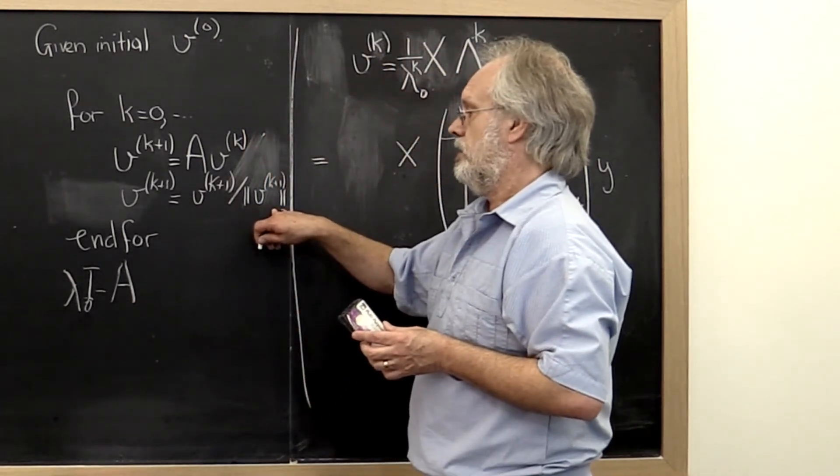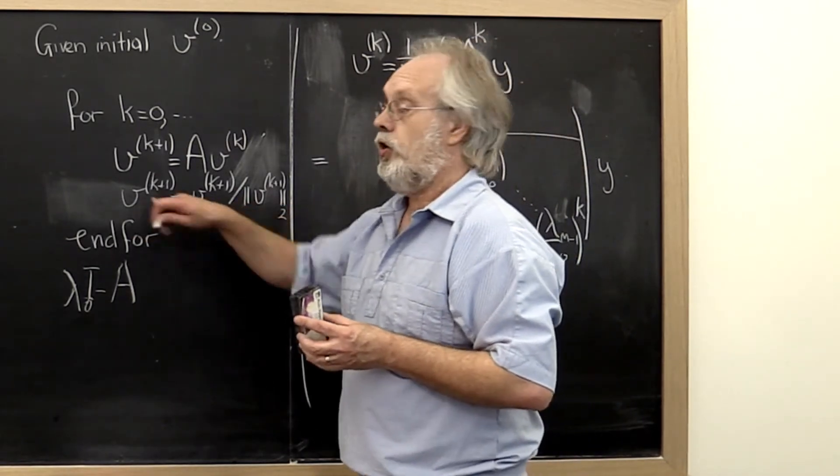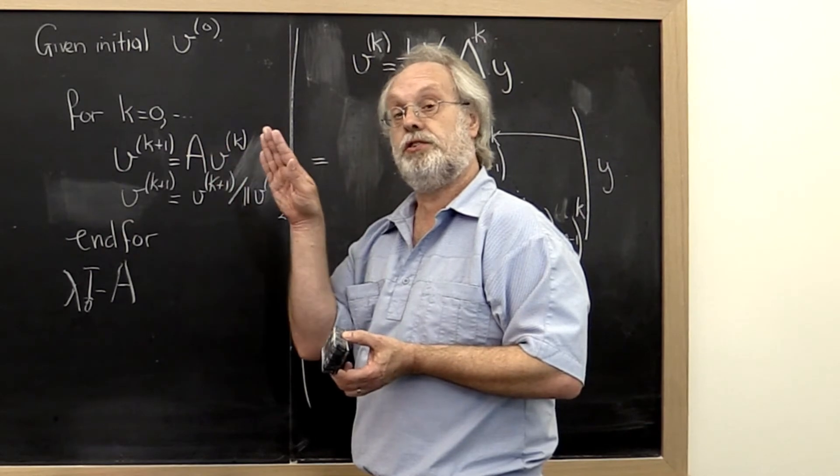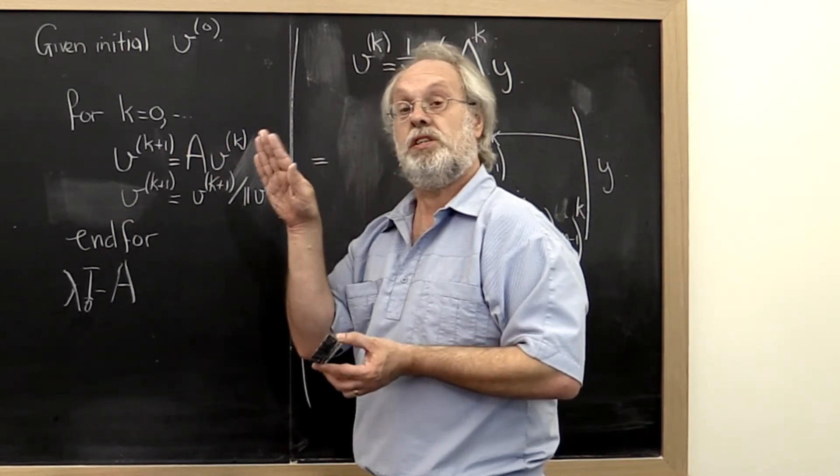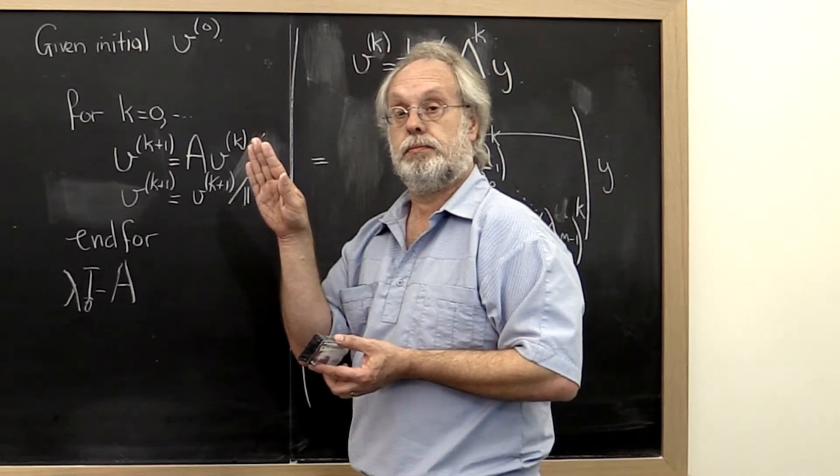We'll compute its length, divide by that length. And notice now we end up with a vector that starts pointing in the right direction, but that always has length 1.